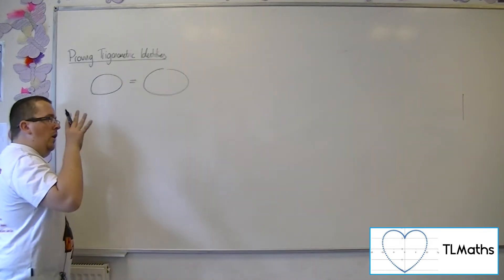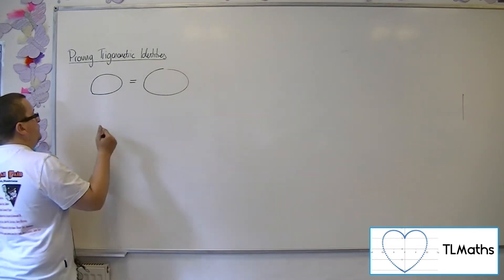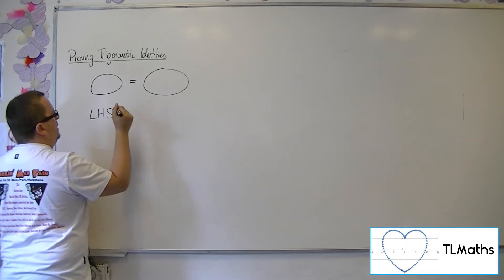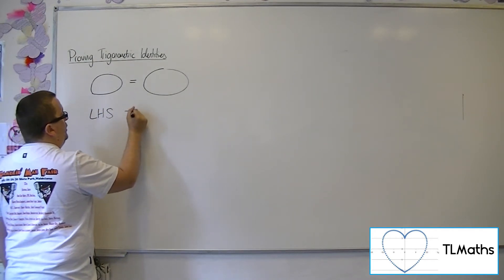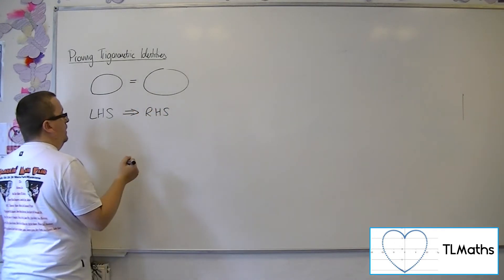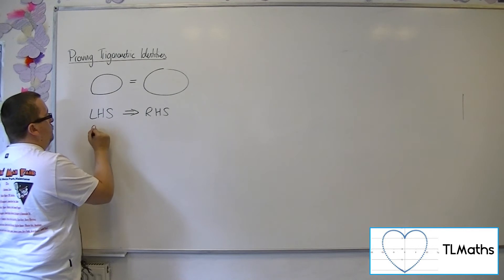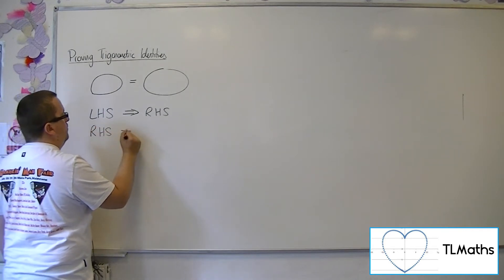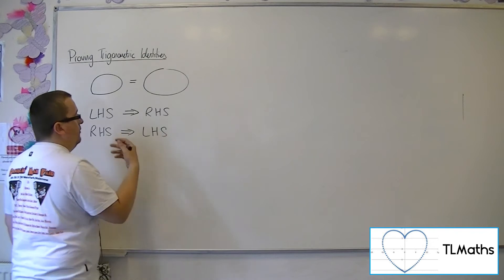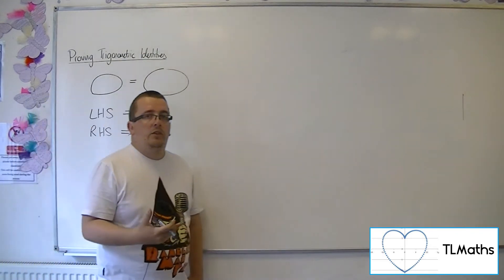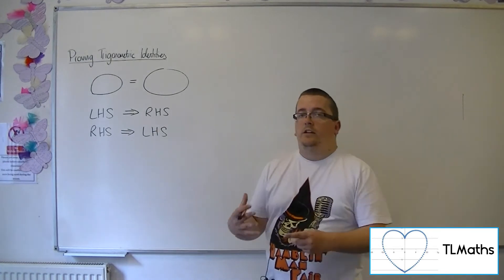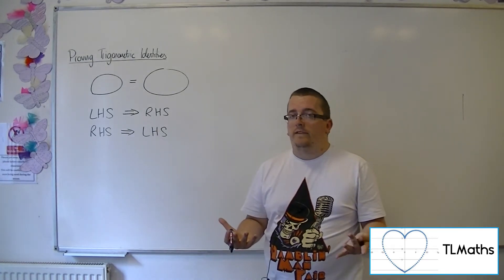You either start with the left-hand side and prove that you can get to the right-hand side, or you start with the right-hand side and prove that you can get to the left-hand side. Both of these are through algebraic manipulation and using trigonometric identities.